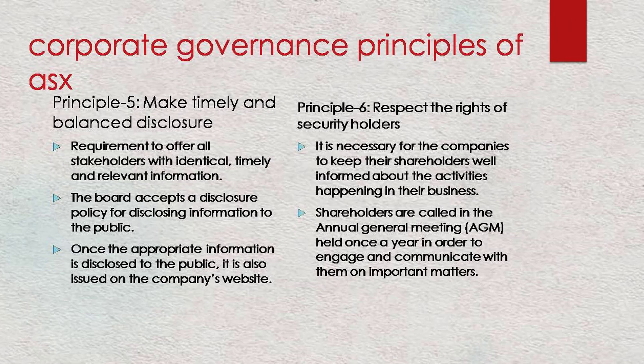Let's discuss the next principle 5: make timely and balanced disclosure. A listed entity should have and disclose a written policy for complying with its continuous disclosure obligation under listing rule 3.1. They should also release a copy of the presentation materials on the ASX Market Announcements platform ahead of the presentation.